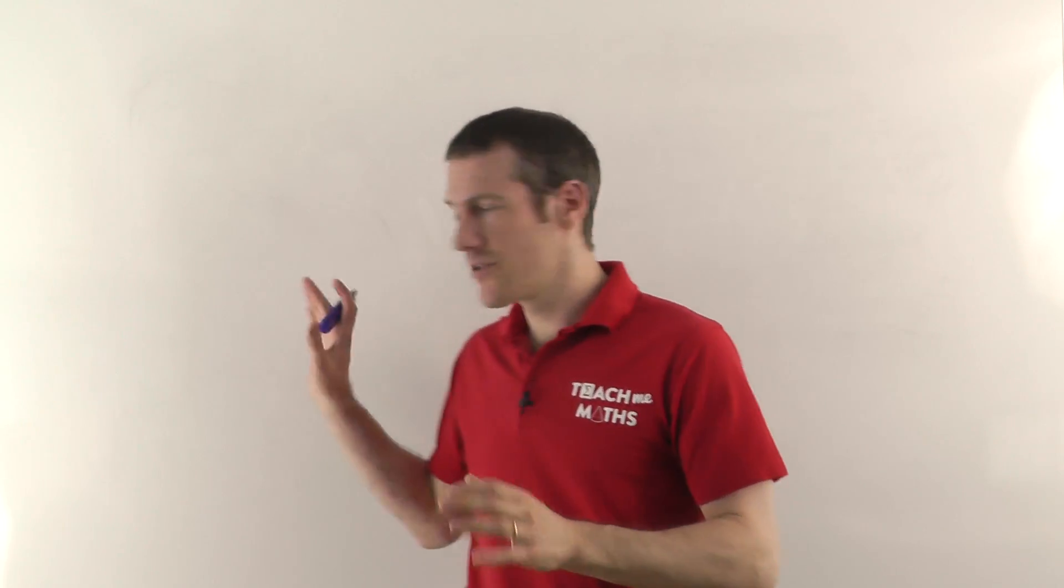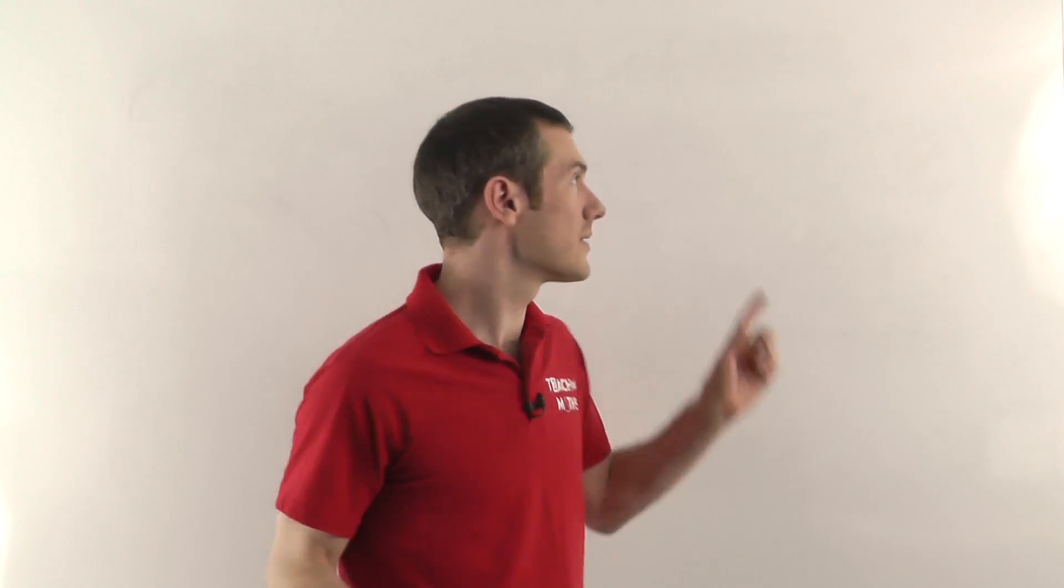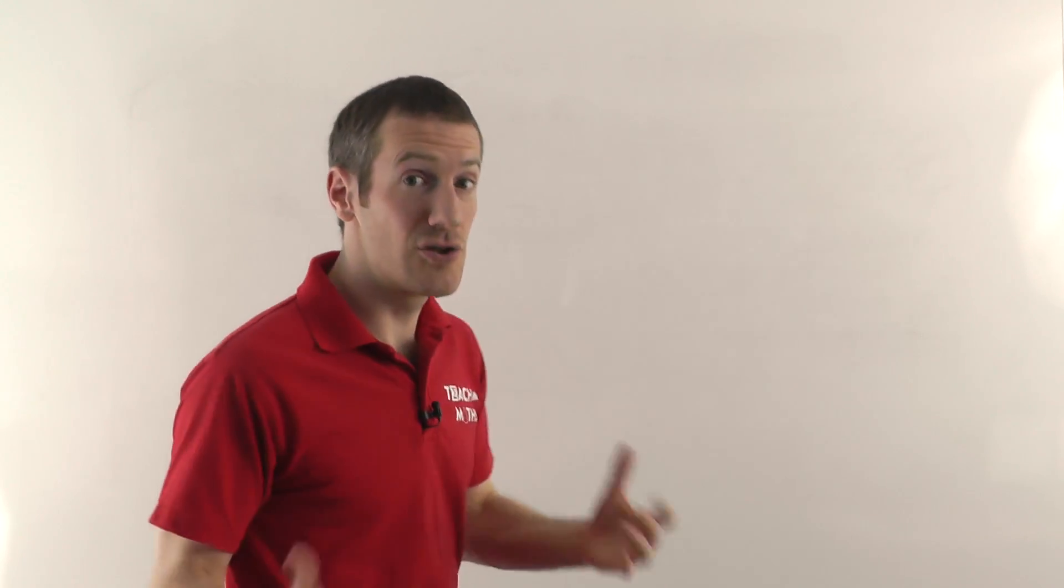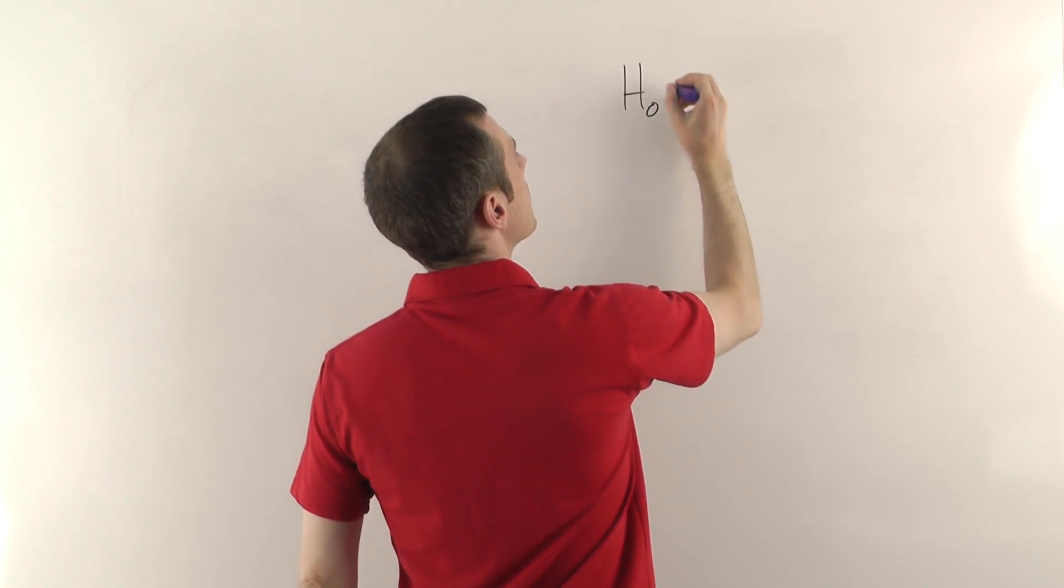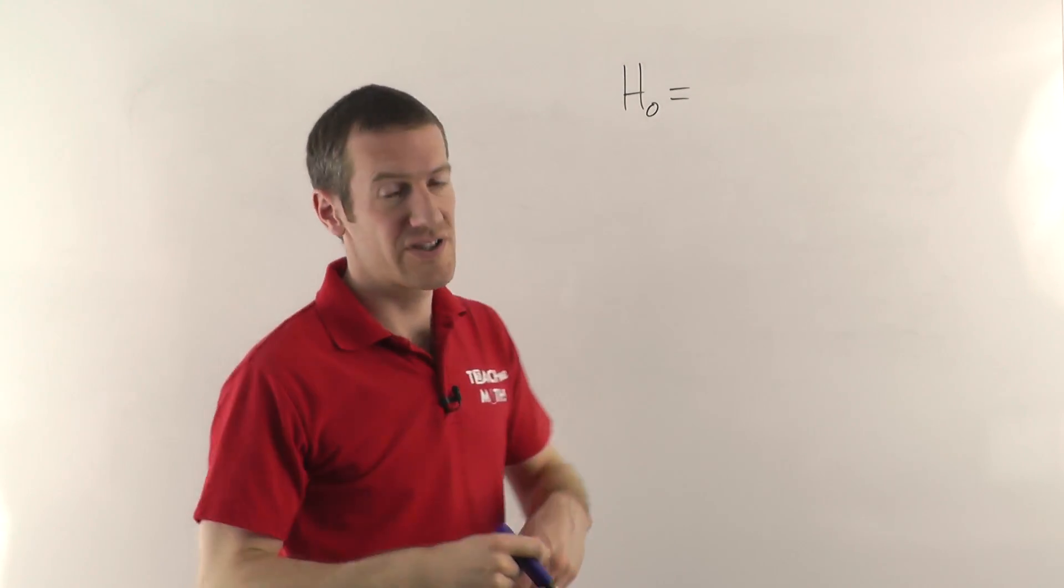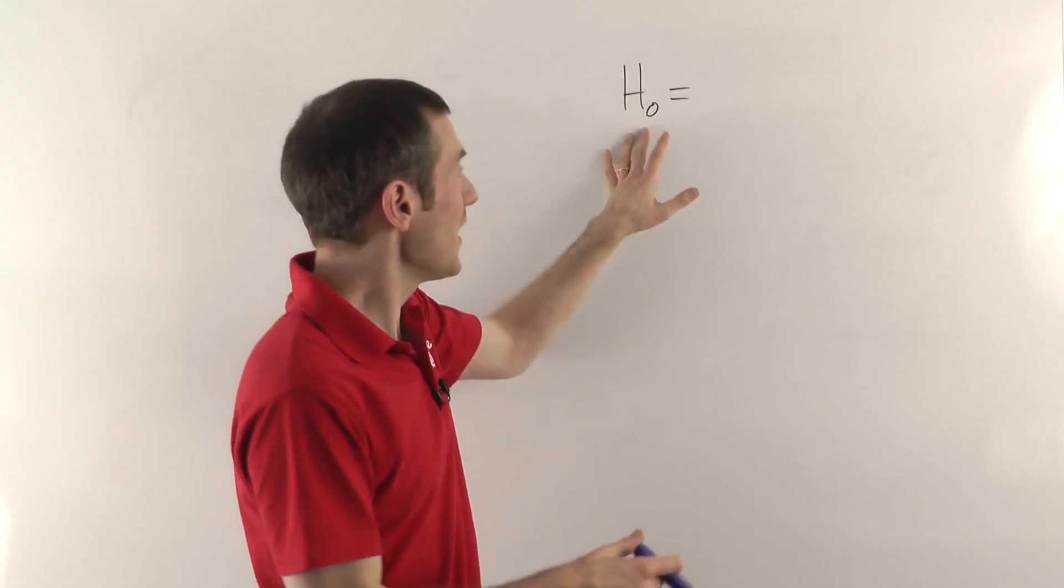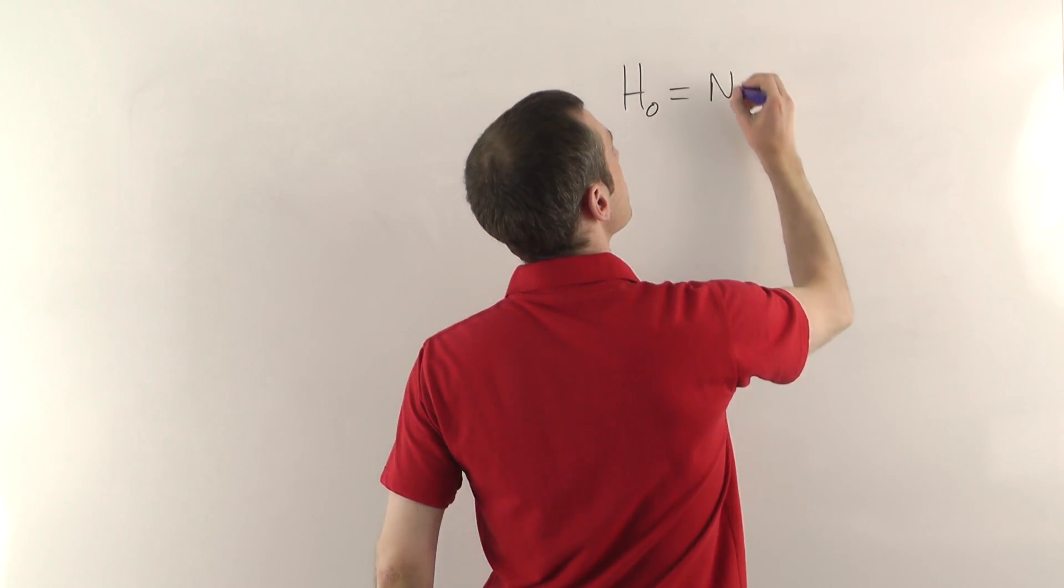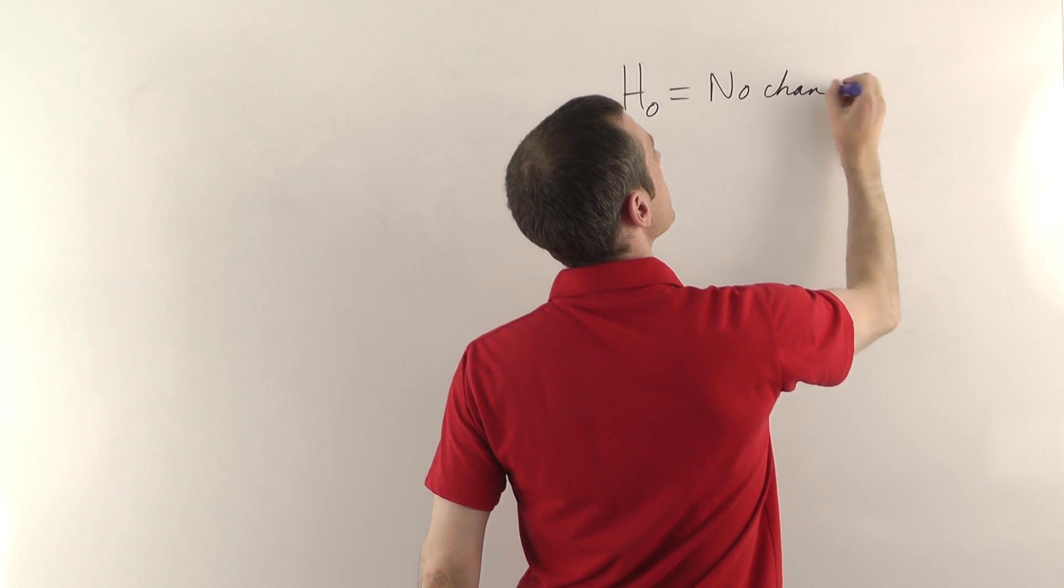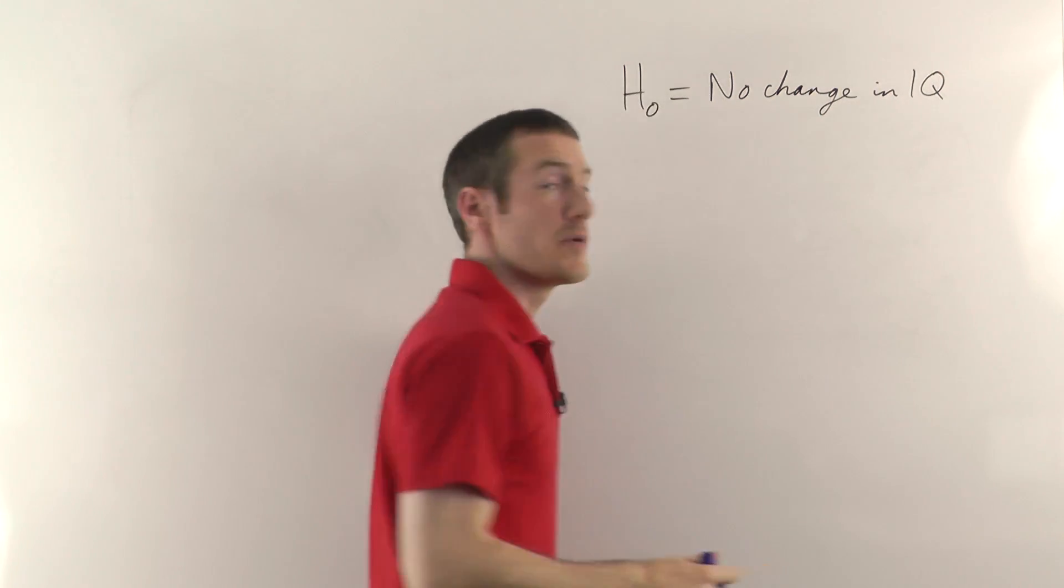Now it's important at this point to specify your null hypothesis and your alternative hypothesis. So H0, the null hypothesis, is going to be - well obviously you want the drug to improve their IQ so the null hypothesis is it doesn't improve. There's no change in their IQ. No change in the IQ of the patients.